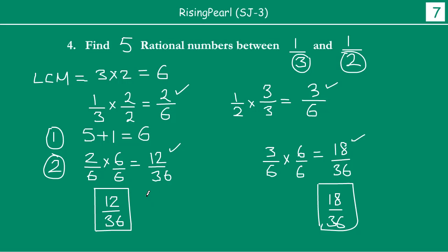12/36, we can write 13/36, then 14/36, then 15/36, then 16/36, then 17/36. So we have seen, friends, these numbers are separate from the comma.